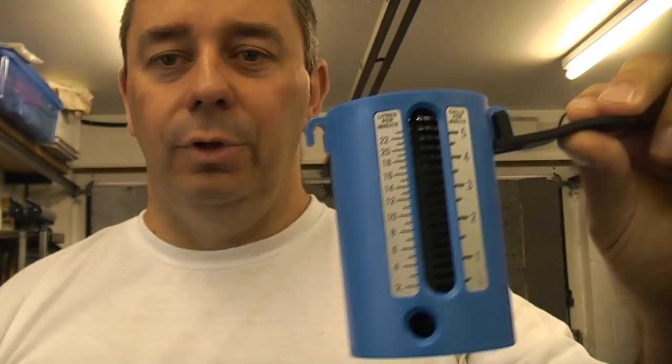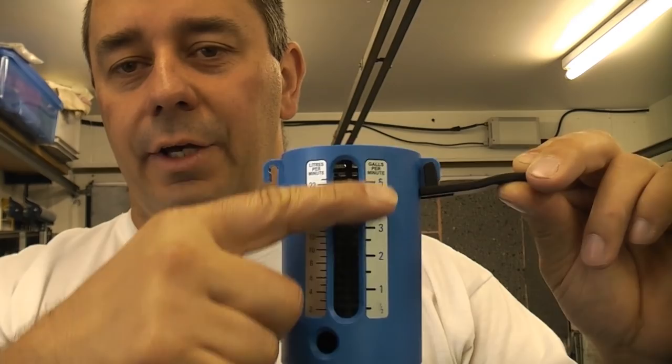To use one of these, it's very simple. You just need to place it under a tap, open the tap, and the water will flow in the top and start to flow out at the bottom.